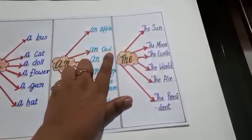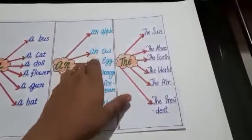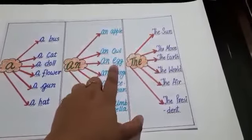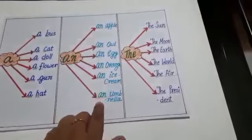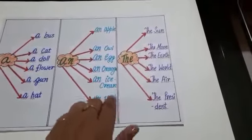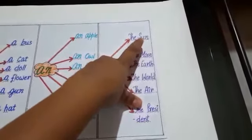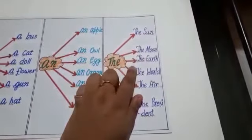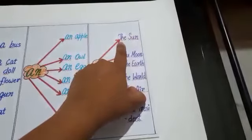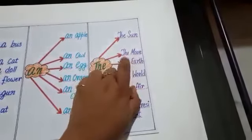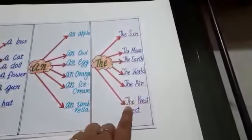An owl. There is only one sun in our universe. The sun is a specific word so what we have to put in front of sun? The. The moon, the earth, the world, the air, the president.